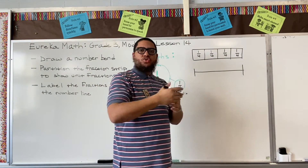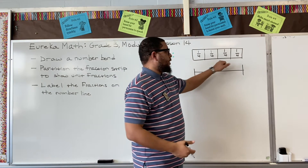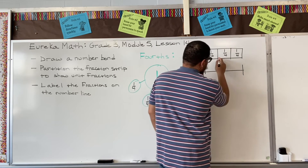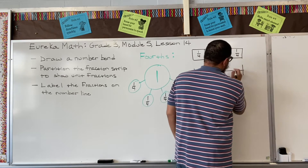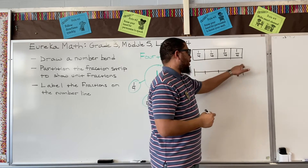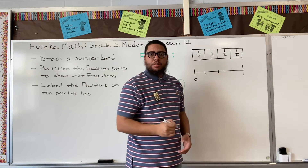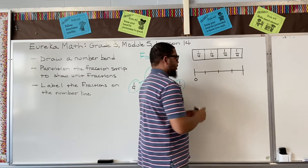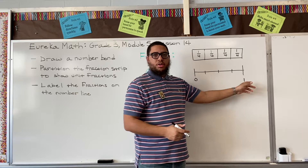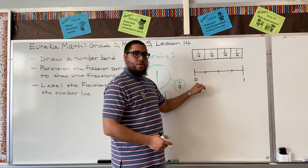On the number line, I'm going to draw hash marks directly below these partitions. At the beginning of the number line we start at zero, and at the end — because we're dealing with fractions — we put a one, because the whole object is equivalent to one. So we start at zero and end at one.